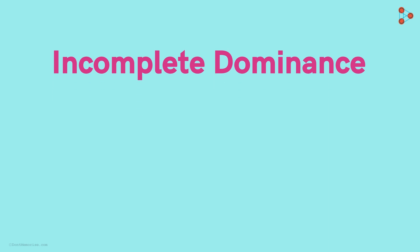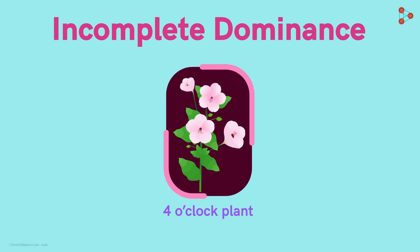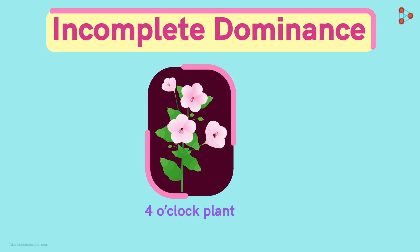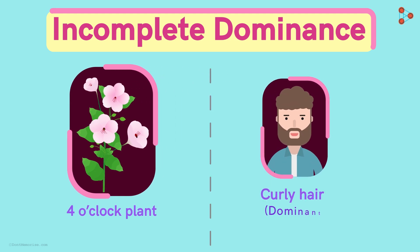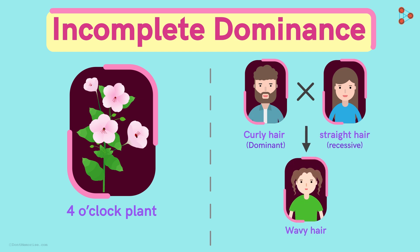In nature, incomplete dominance is seen in plants like the 4 o'clock plant. In humans, incomplete dominance is seen in hair type — curly hair, which is dominant, when crossed with straight hair, which is recessive, gives us wavy hair. Wavy hair is a trait intermediate of both types, and hence it is an example of incomplete dominance.